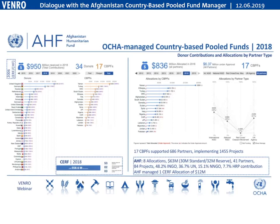The majority of CBPF funding recipients are INGOs, usually followed by local NGOs and then the UN. It depends on the country and context on who is best placed. Country-based pool funds work closely with the cluster system and aim to disperse funds to those best placed. It's worth discussing the role of clusters and how CBPF money is allocated — not a strict separation by agency type, but based on who can best respond.